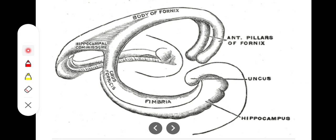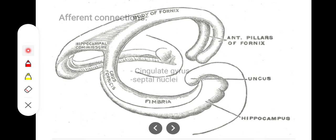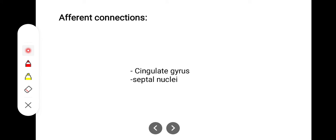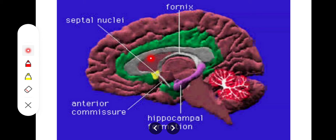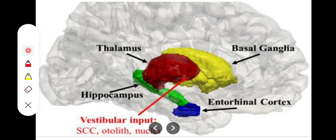The uncus is another fold of gray matter, another gyrus. The fornix is a very important efferent of the limbic system. Some afferent connections come via the cingulate gyrus. We also discuss the septal nuclei — gray matter nuclei present in the septum — which send efferents toward the hippocampus. The stria medullaris thalami is the connection between the habenular nuclei and the septal nuclei.